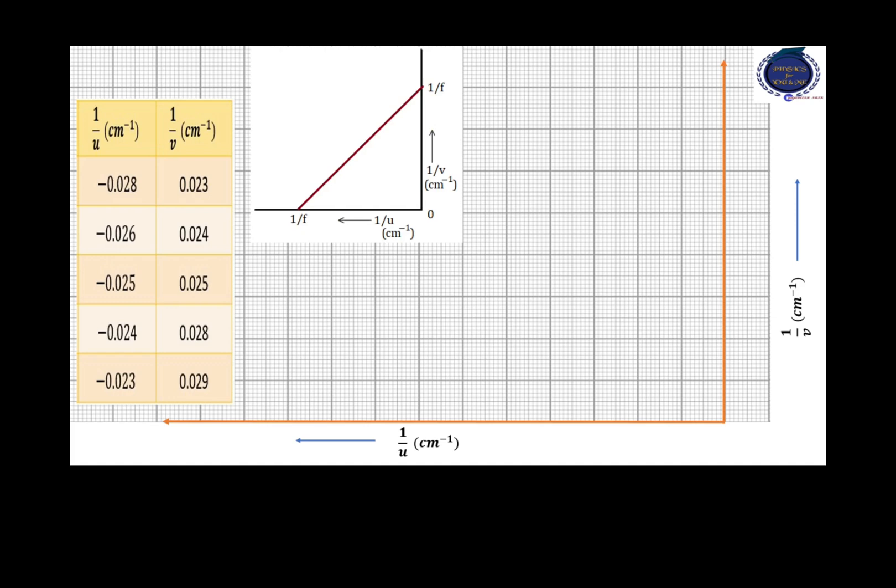Here, we have a luxury of choosing the same scale for both x and y-axis. Since 1 by f is equal to 0.05 per centimeter, we can choose 1 centimeter is equal to 0.01 per centimeter for both x and y-axis. Mark the values. Then mark the points. Each point will be given by different colors because they are lying much closer to each other.